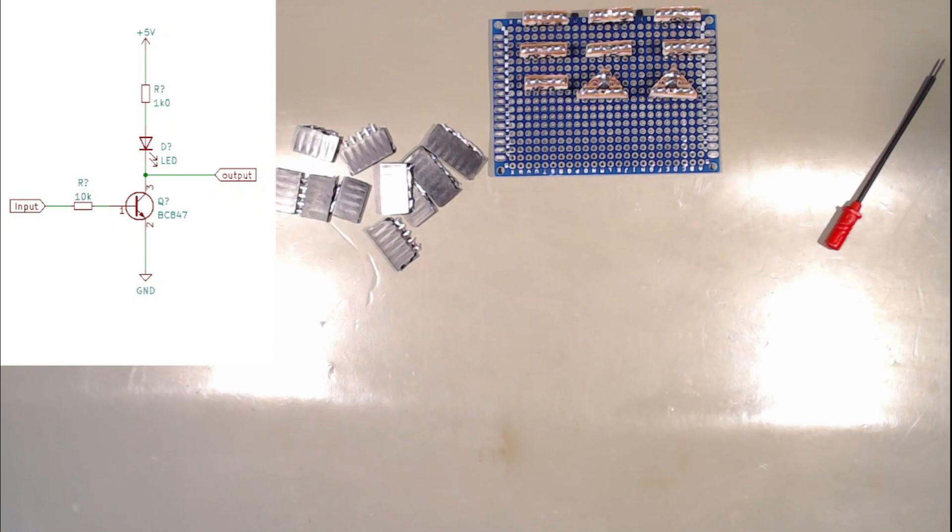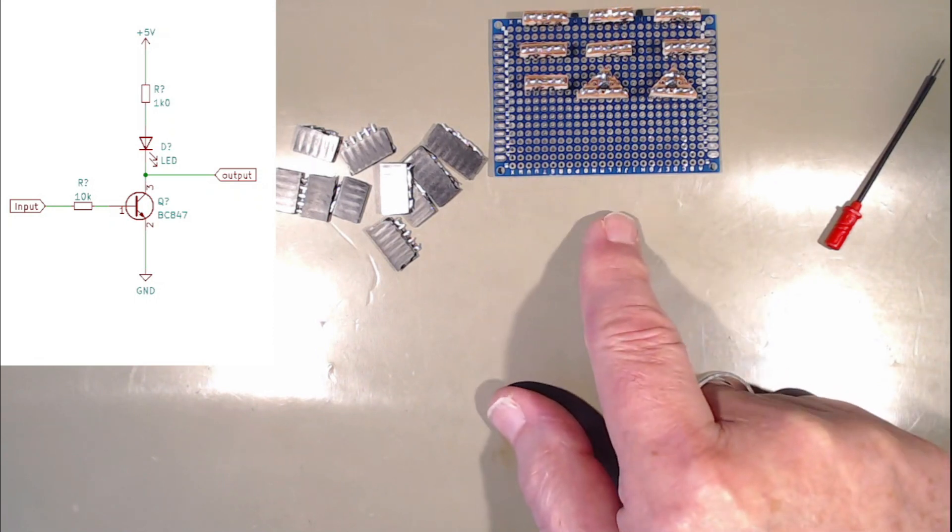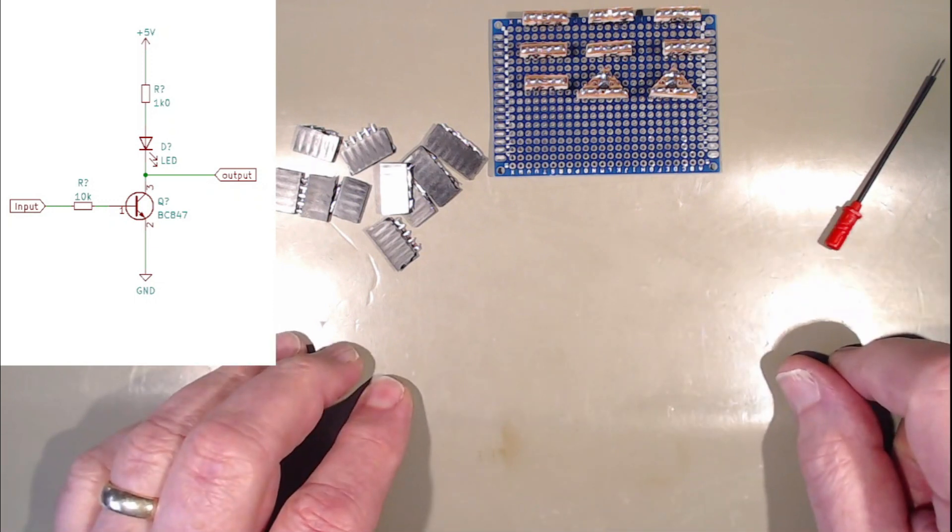So instead of passing the LED current we're only going to pass current for 10k and of course that resistor could be a lot lower, but there's a reason for that that's just to save a bit of current.